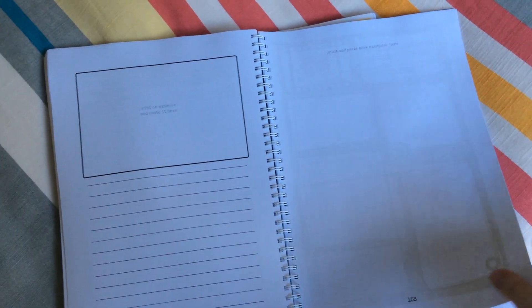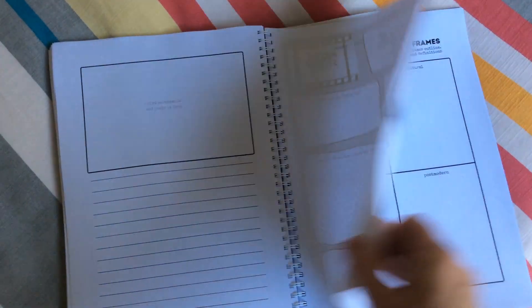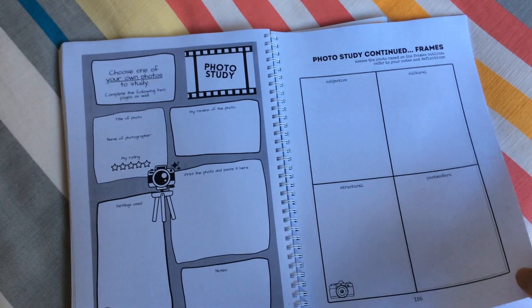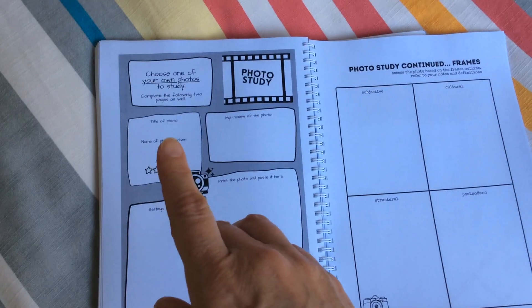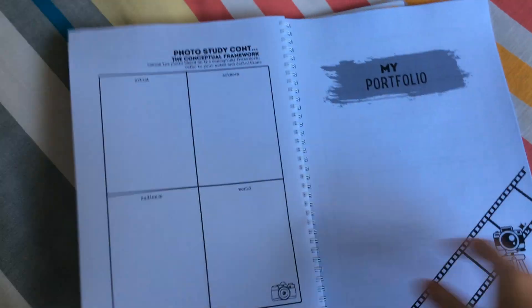So they can print out photos from that journalist that covered the event and write up how they feel that affected history. Choose your own photo to study and assess.